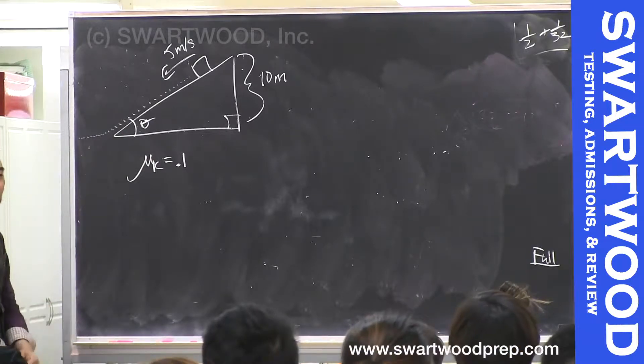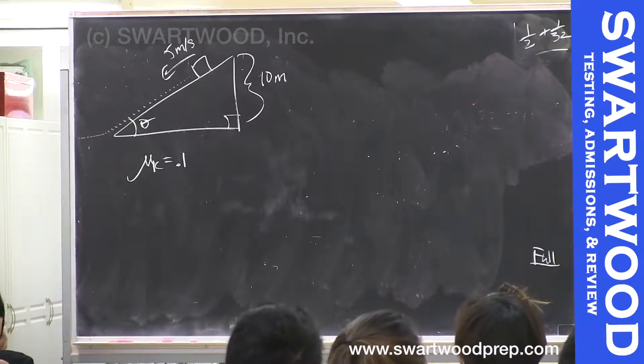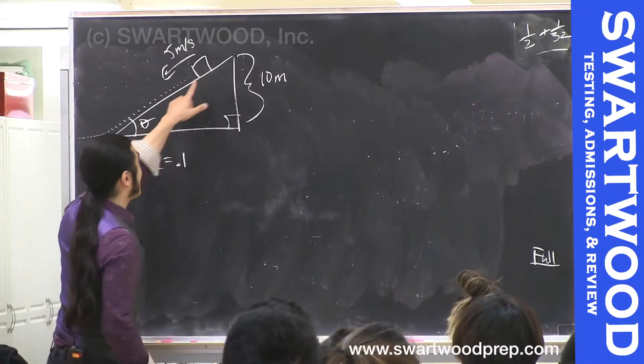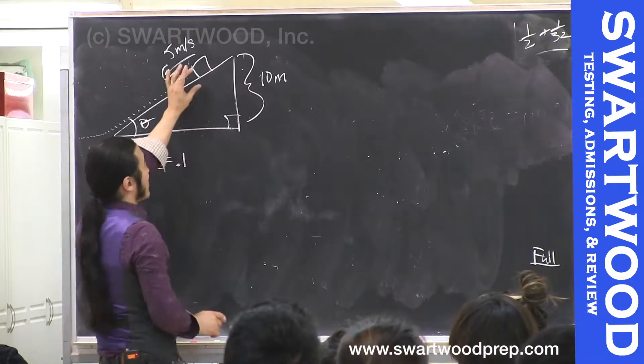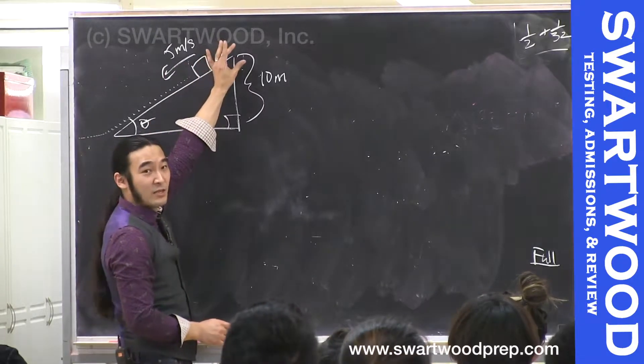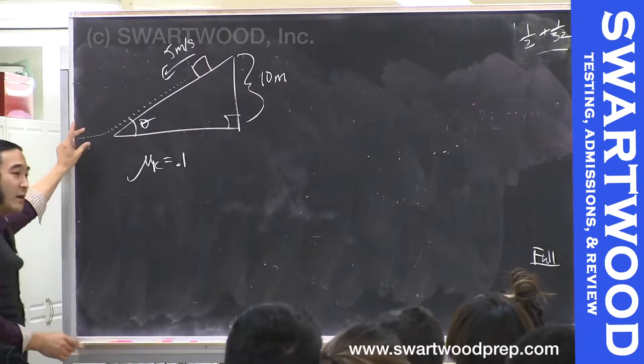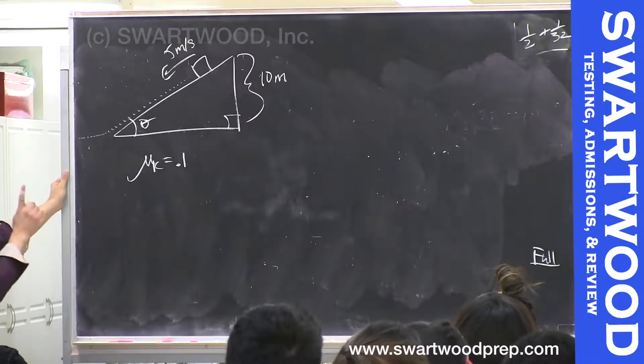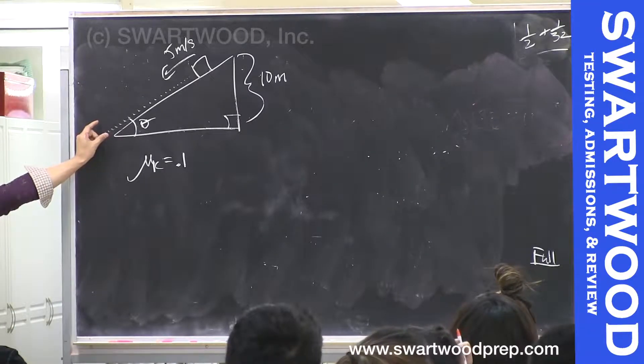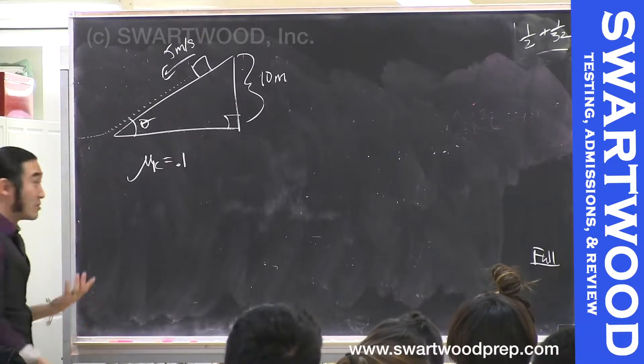So what's the question? The question is, along this path from the very top, starting at five meters per second, how much work has friction done as the guy slides from the very top to the very bottom at a constant speed of five meters per second? Everybody should try that. How would you approach this problem?